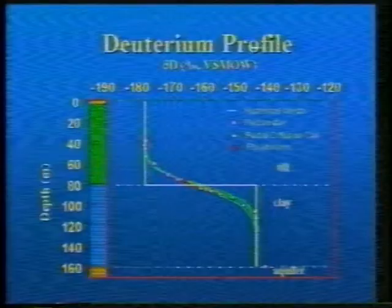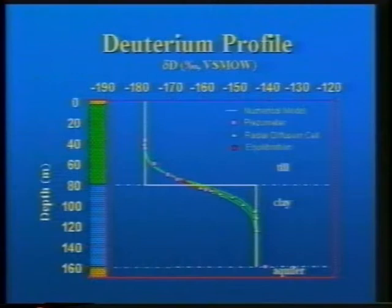Our best fit is shown here. We've had a number of other simulations, but I'm just going to present the best fit data. It was obtained for a velocity of between 0.75 and 1 meter per 10,000 years, and for a transport time of between 20,000 and 30,000 years.